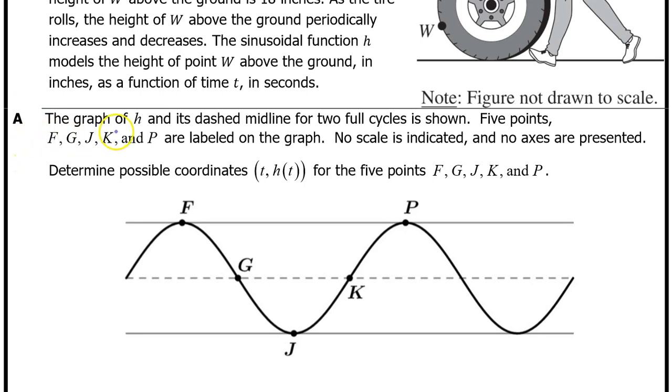Part A. The graph of h and its dashed midline for two full cycles is shown. Five points, F, G, J, K, and P, are labeled on the graph. No scale is indicated and no axes are presented. Determine the possible coordinates, t, h of t, for the five points, F, G, J, K, and P.